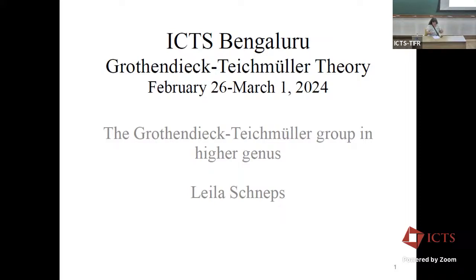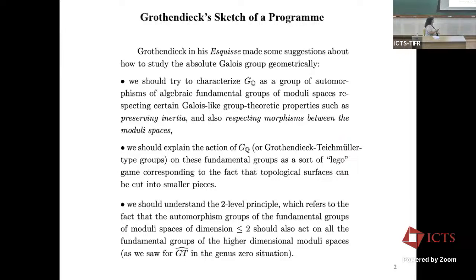What I'm going to talk about now is very much the same subjects as what we just heard. These two talks are really connected together, just expressed in a different way — both the concept and proof of the two-level principle. I'm going to start by explaining what Grothendieck was really aiming for in the part of the ESP that we study: trying to characterize the absolute Galois group as a group of automorphisms of certain groups, which are the fundamental groups of the moduli spaces.